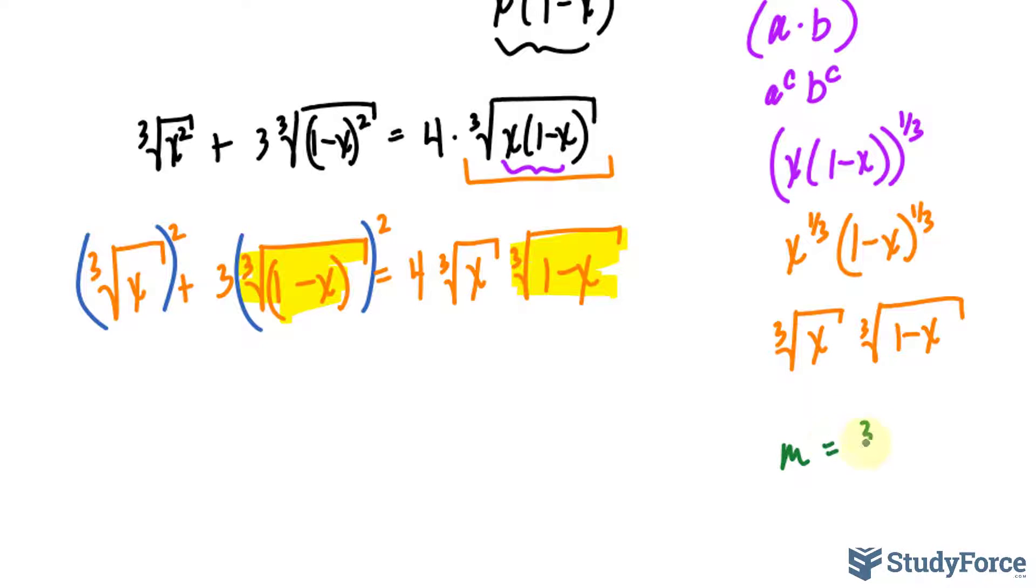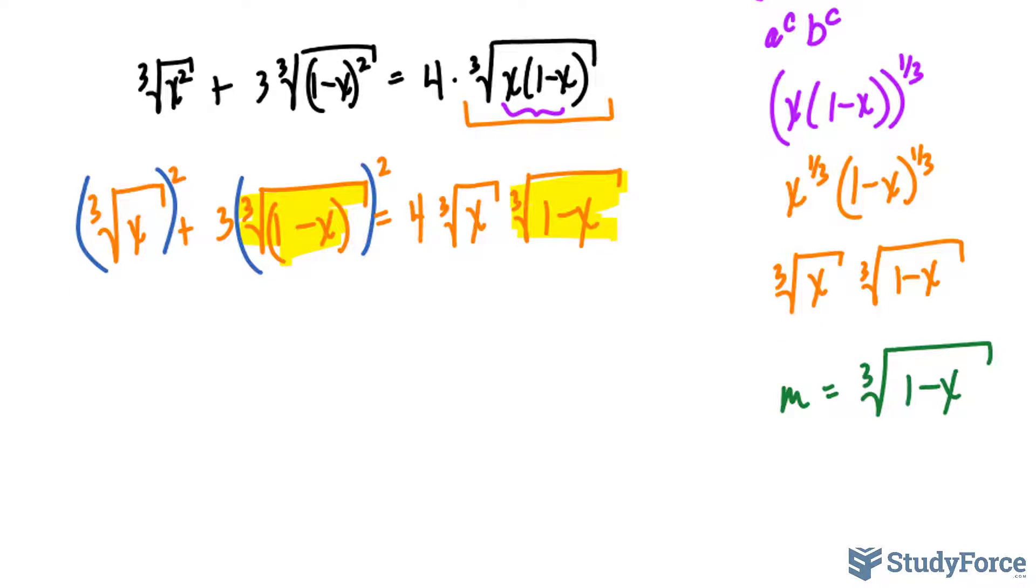So I'll say m is equal to the third root 1 minus x. This is a temporary replacement. In addition, you'll notice that this factor and the third root of x here are the same and I can replace those with another letter of my choosing. Let's say n where n is equal to the third root of x. So replacing that with n to the power of 2 plus 3 times and replacing that with m to the power of 2, on the right side we have 4 times n times m.